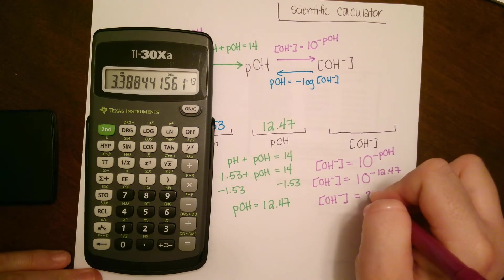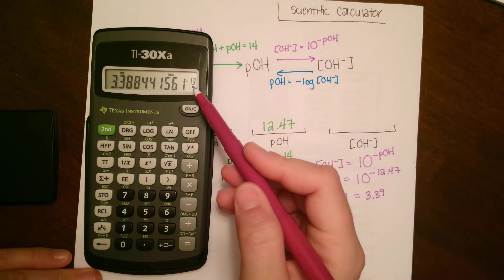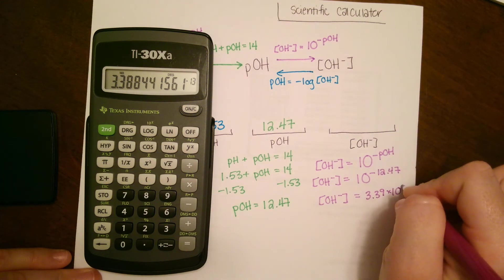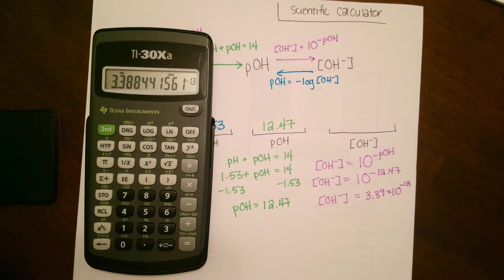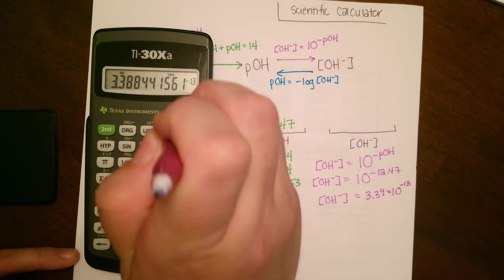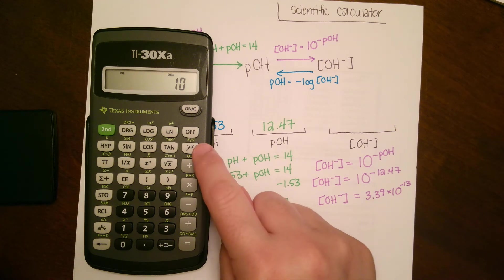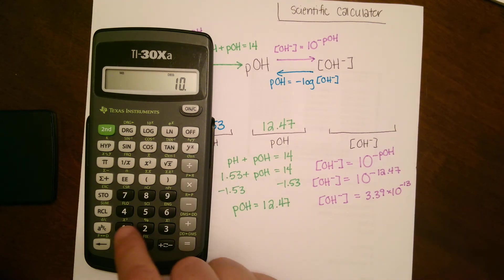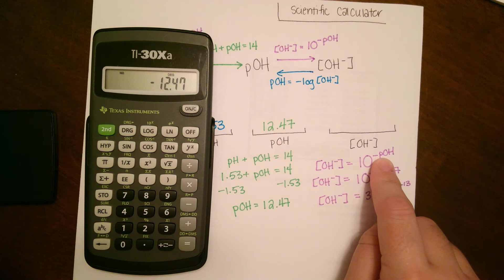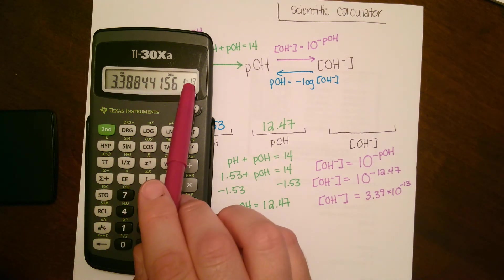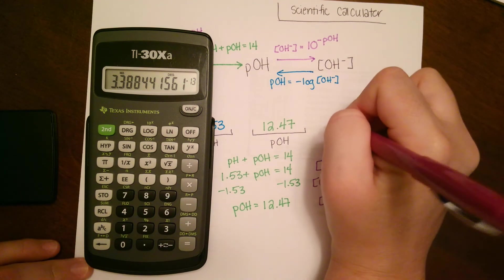We can round it to 3.39. Make sure you remember that this is not to the power of negative 13, but it is times 10 to the power of negative 13. Those are very different answers. To plug this one in, you're going to say 10, hit that y to the x button, 10 to the power of 12.47, make it negative, hit enter, and it's 3.39 × 10^(-13).